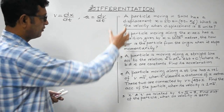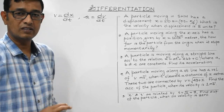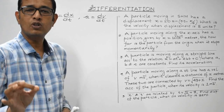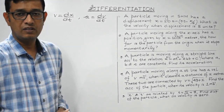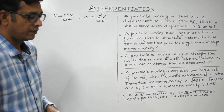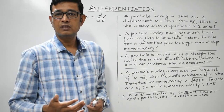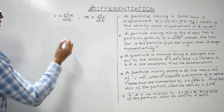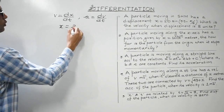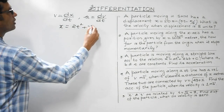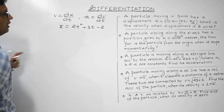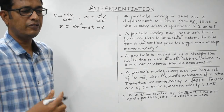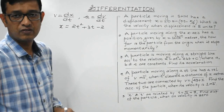I have shortlisted a few questions based on calculus. Before starting, let me discuss some very basic questions. Suppose a body is in motion and its displacement x varies with time t as x = 2t² + 3t − 2, where x is in meters and t is in seconds. What will be the velocity and what will be the acceleration?